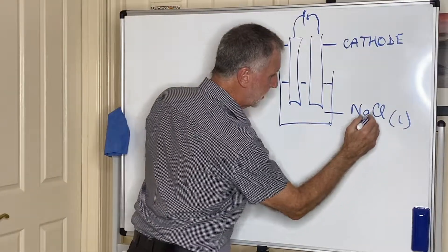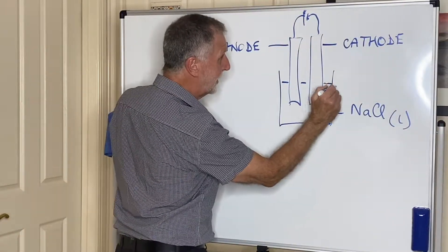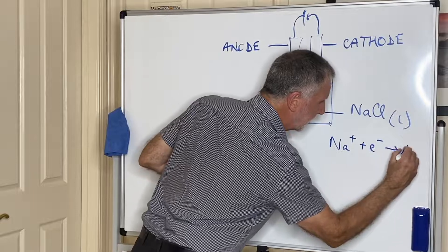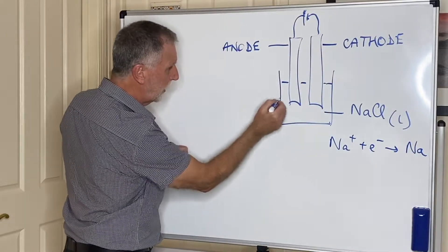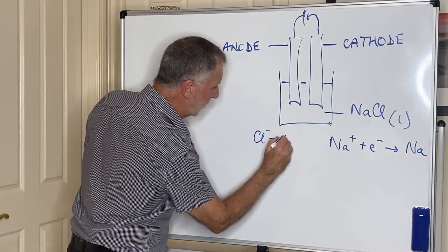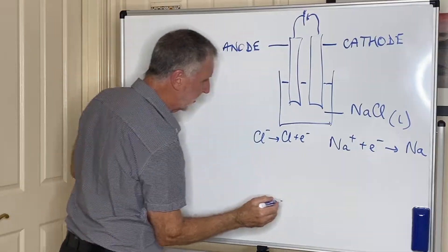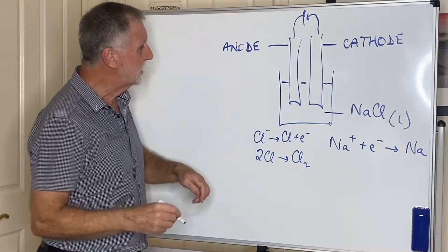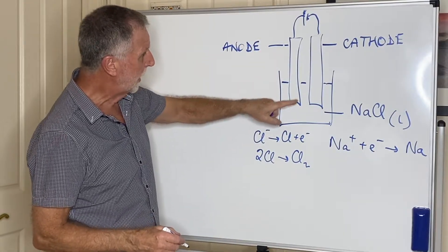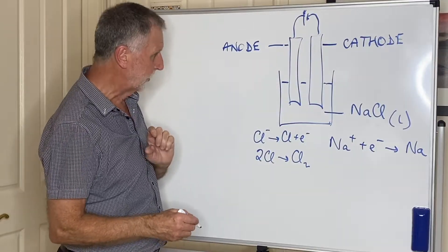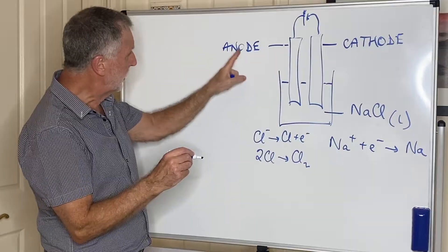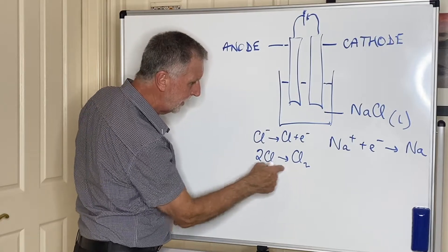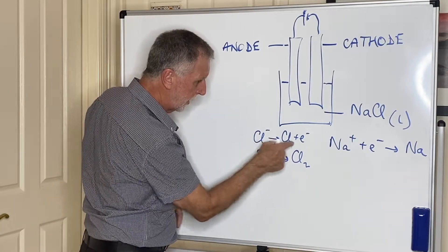The sodium ions obviously are going to travel to the negative electrode, the cathode. So sodium ions will gain electrons at the cathode and become sodium metal. Chloride ions will travel to the anode. Chloride will then turn into chlorine atoms by giving up electrons, and then two chlorine atoms become chlorine gas. So what you would see is chlorine gas forming at the anode and sodium metal forming at the cathode. Even though these have changed signs, the anode is now positive, the cathode is negative. At the anode, we are still seeing oxidation taking place, electrons being lost.